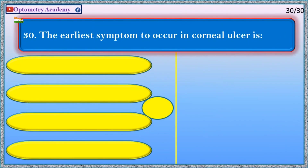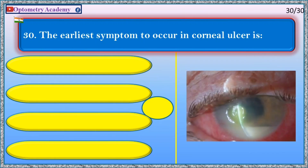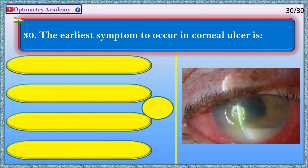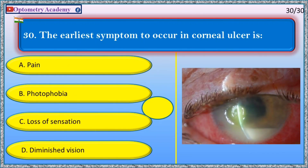The earliest symptom to occur in corneal ulcer is: A. Pain, B. Photophobia, C. Loss of sensation, D. Diminished vision.